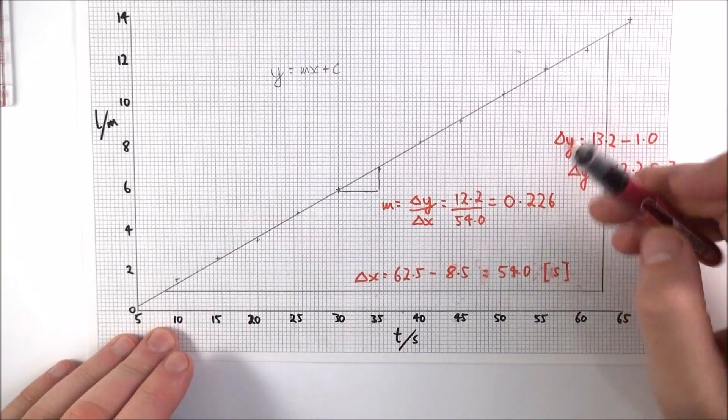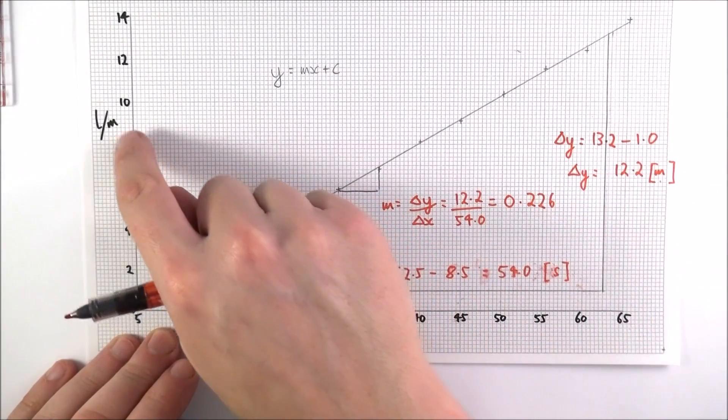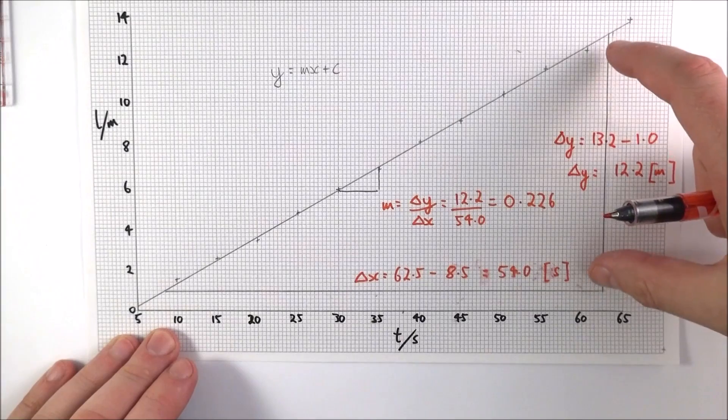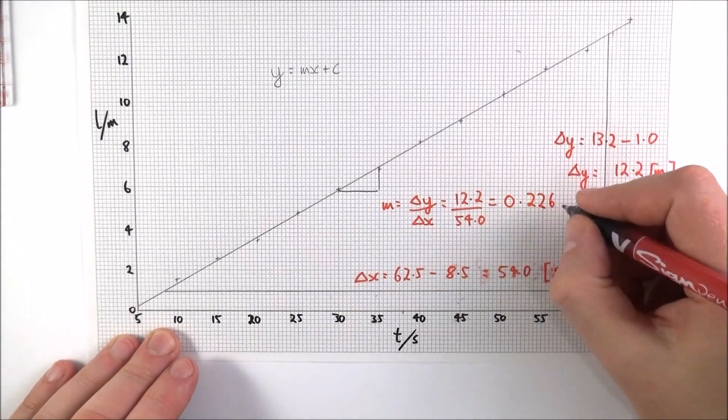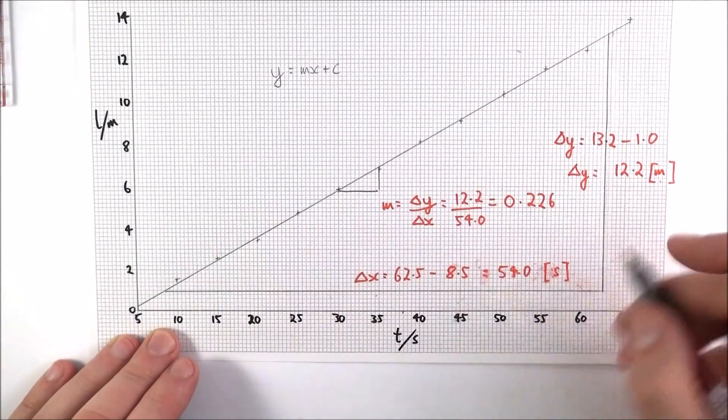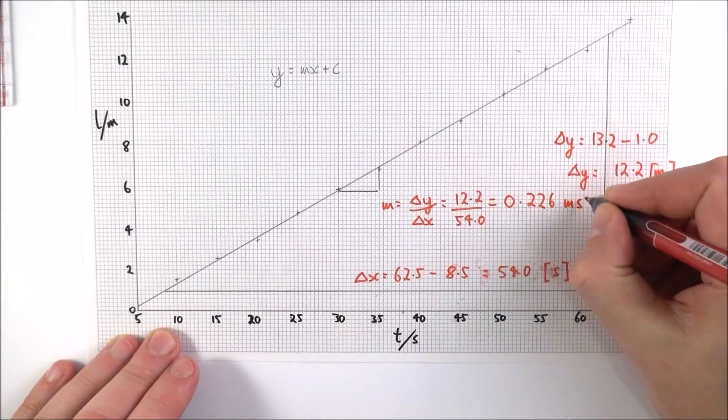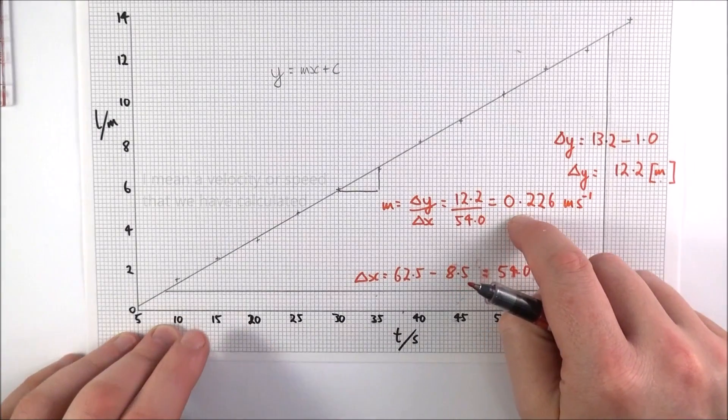Now the other thing about this is that because we've got real units here, what we're looking at is a distance in meters over time in seconds. And therefore the units for this gradient, because gradients do have units as well, are meters per second. So maybe this is an acceleration that we found out.